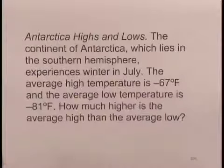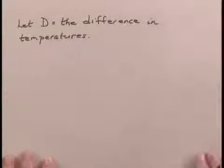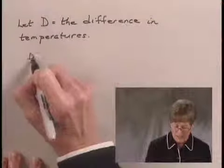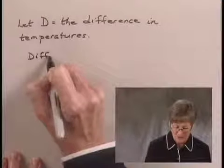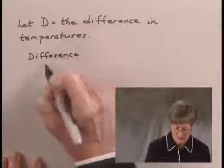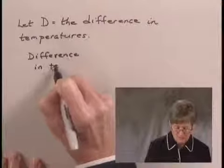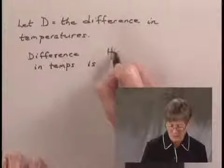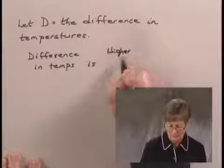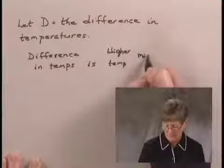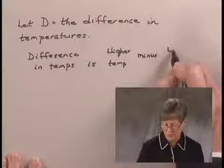Well, we'll write an equation to find this difference and we'll begin by letting D be the difference in the temperatures. And let's write the equation this way. We'll say the difference in temperatures is the higher temperature minus the lower temperature.